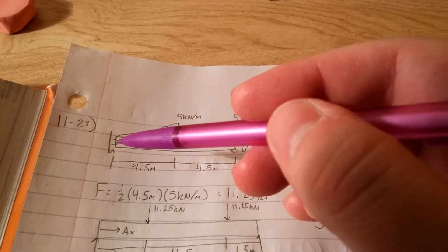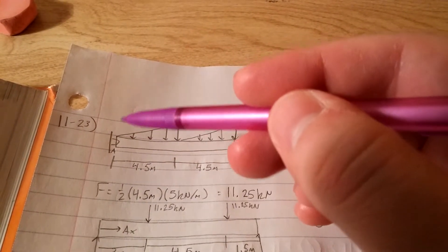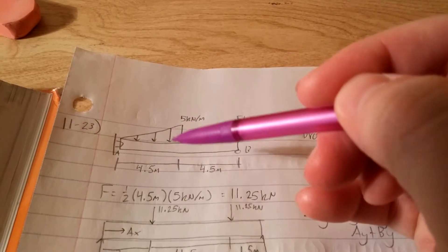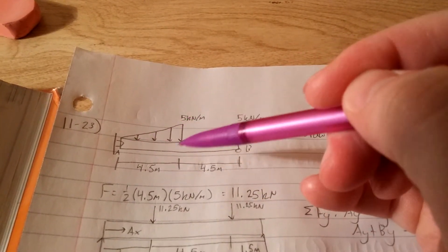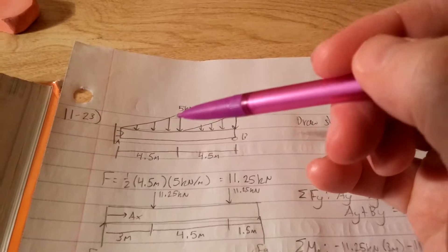If we look at this, we're going to have AY, and then we're going to have the result of this intensity, which is 11.25.